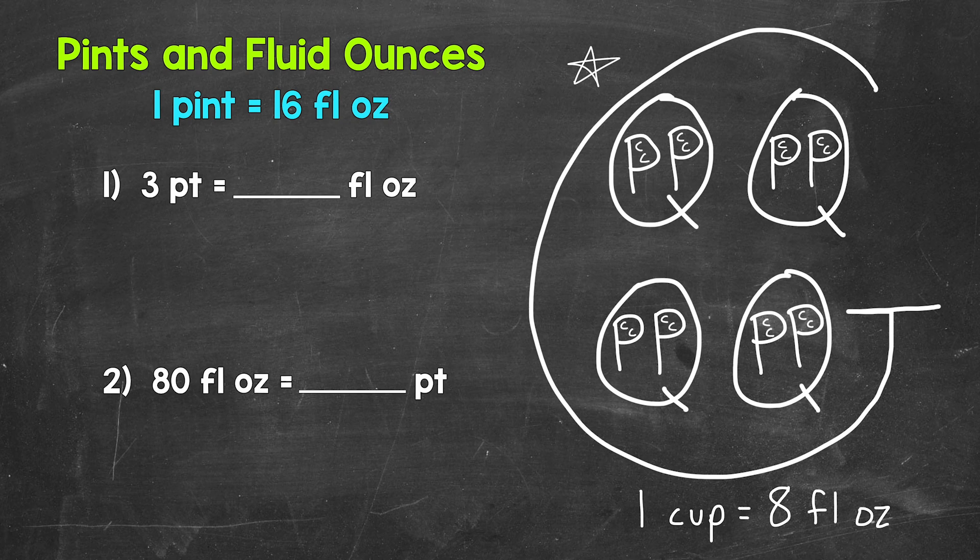Now, within each cup, each of those Cs, there are eight fluid ounces. Now, if we focus in on one pint, one P there, we have two cups, and in each of those cups, again, eight fluid ounces. That gives us 16 fluid ounces.